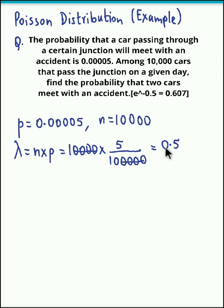So the value of the parameter is 0.5. Now we have to find the probability that 2 cars meet with an accident. So suppose x is the number of cars that meet with an accident. We need to obtain the probability at x equal to 2.